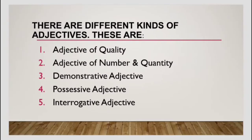There are five different kinds of adjective. First, adjective of quality. Second, adjective of number and quantity. Third, demonstrative adjective. Fourth, possessive adjective. Fifth, interrogative adjective.